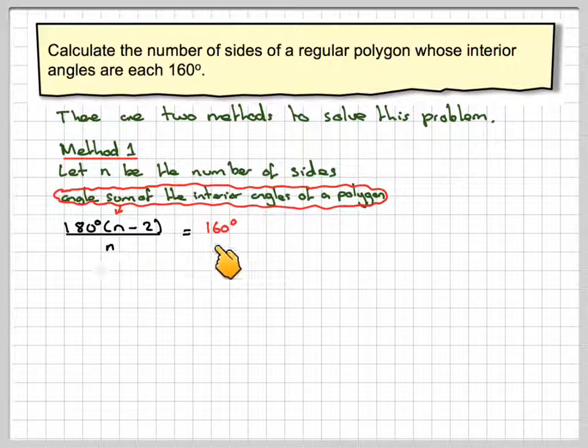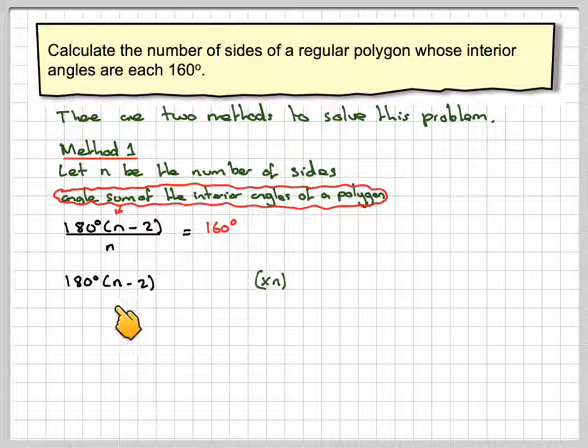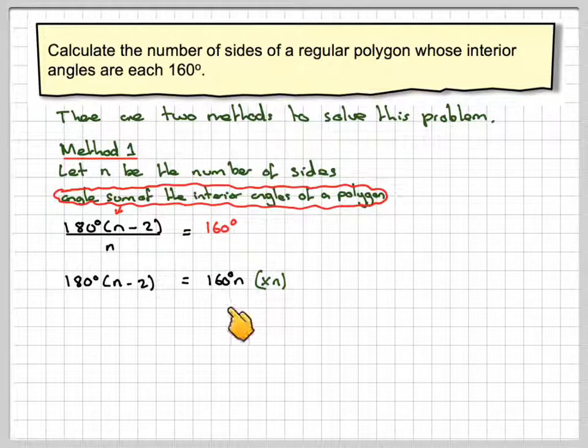Now all I need to do is solve this equation. To solve it, first we multiply both sides by n to remove this n from here. On the left-hand side, we get 180 times n minus 2. And on this side, we're going to get 160 times n.